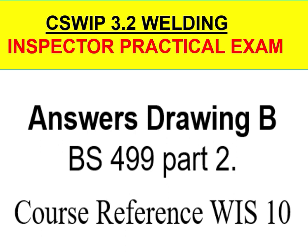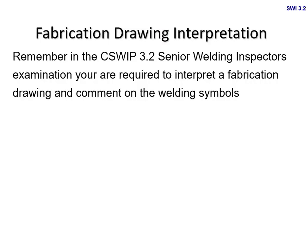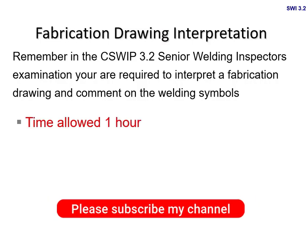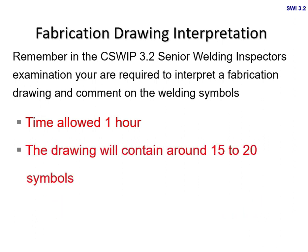Let's start — I will explain to you one by one. This is the fabrication drawing interpretation. Remember, in the CSWIP 3.2 welding inspector examination you are required to interpret a fabrication drawing and comment on the welding symbols. You need to check the drawing, interpret it from a welding inspector's point of view — where the welding joints are — and if you think a symbol is not right, you need to give a comment on it. The time allowed is one hour.